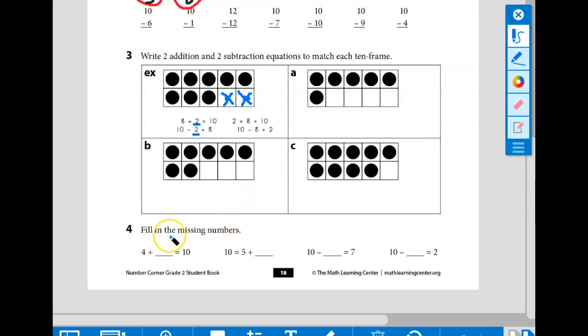Number four says fill in the missing numbers. 4 plus something equals 10. 10 equals 5 plus something. 10 minus something equals 7. 10 minus something equals 2.